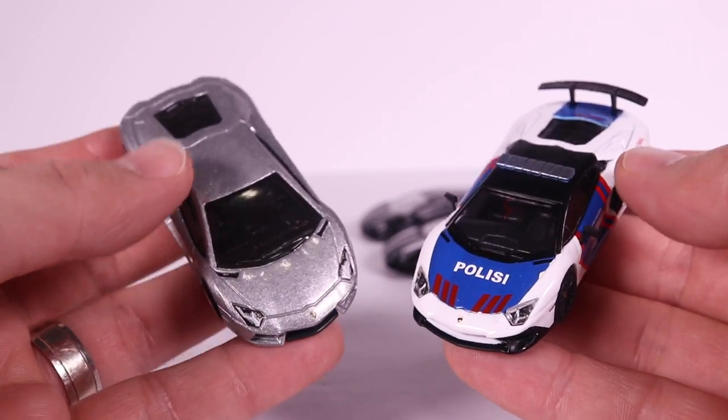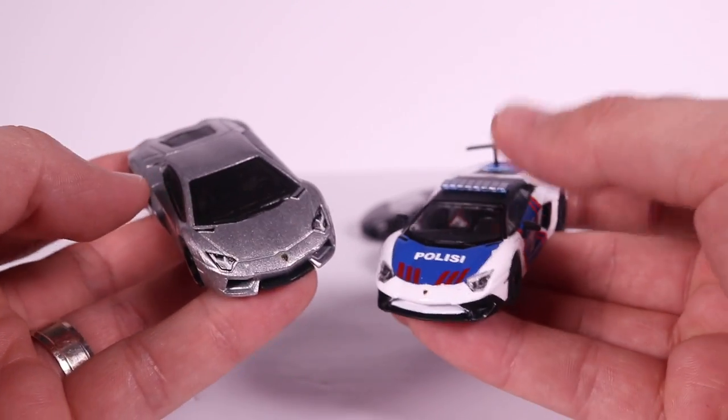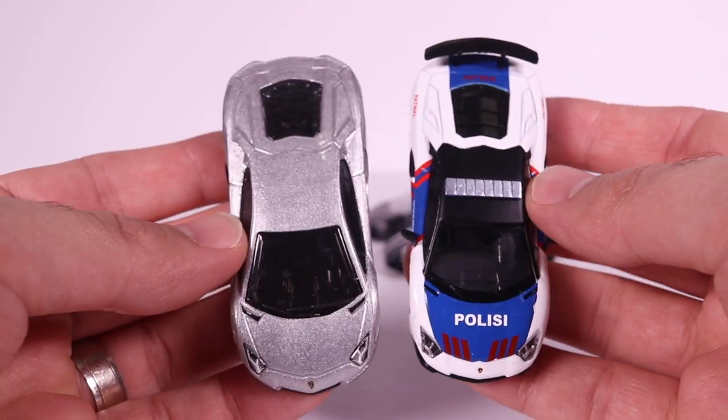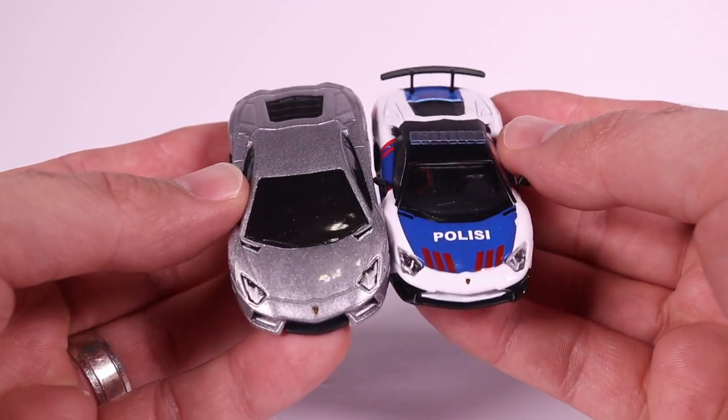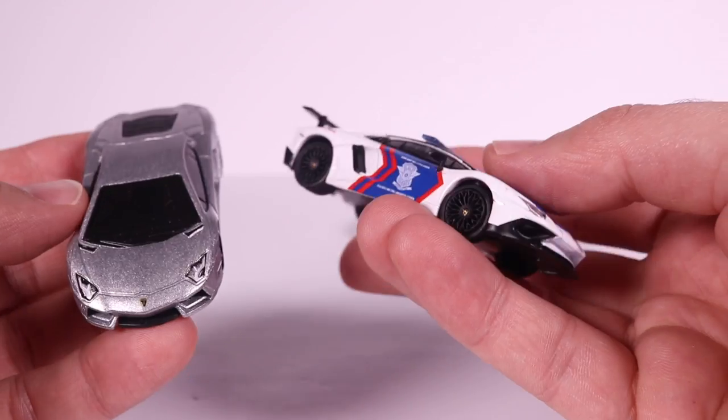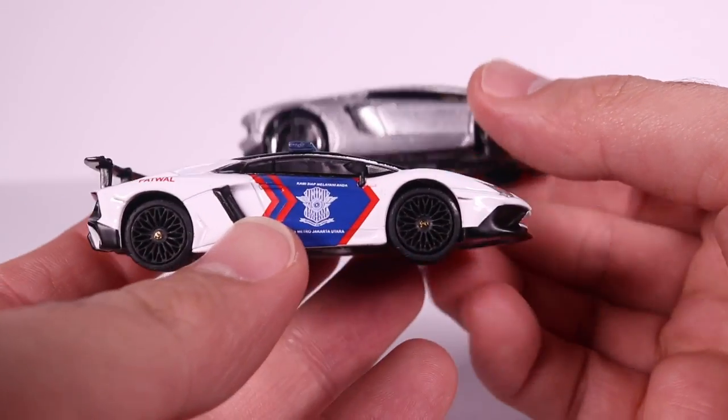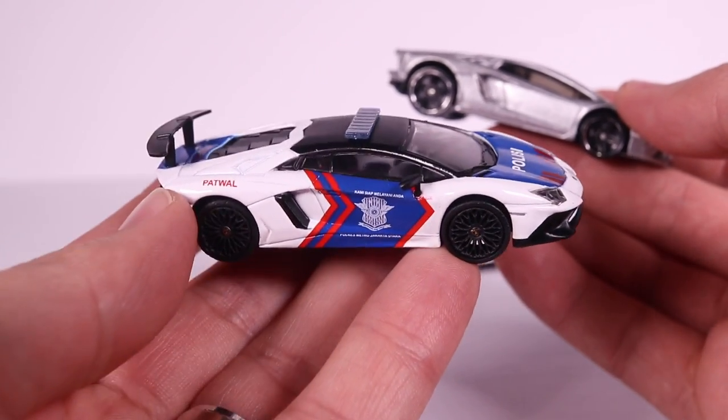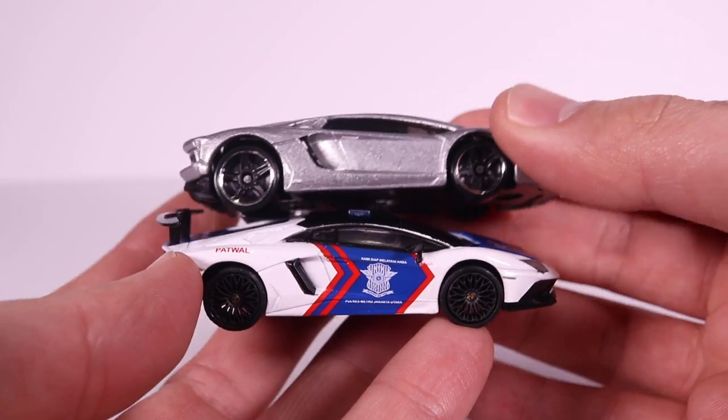And we are not comparing completely apples to apples, but very close, because this is the Aventador. That's the Aventador SV, so very close 1:64 scale. But you can see, Tarmac Works detail on cars is definitely better. It's higher quality than the Hot Wheels variations. But then again, these are not really toys. These are more display pieces.